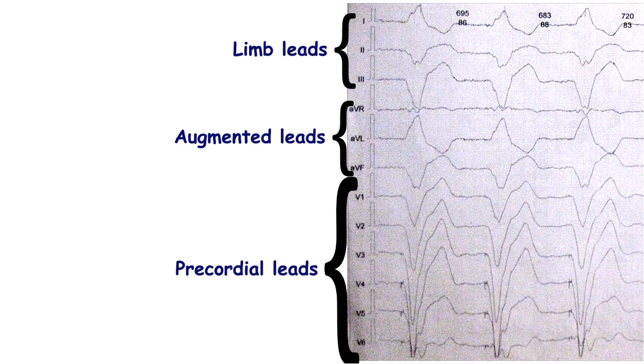There are three types of leads: limb, augment, and precordial, also called chest leads. Leads 1, 2, and 3 belong to the limb leads. Leads AVR, AVL, and AVF are called the augment leads. And leads V1 through V6 belong to the precordial leads.